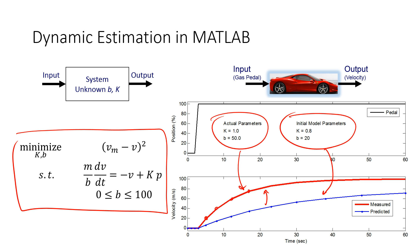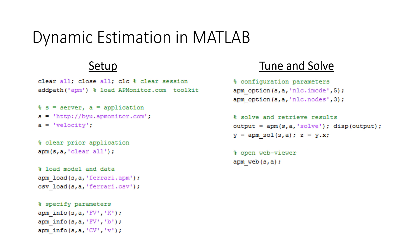In this case, it's going to be least squares, but I'm going to have to solve this and minimize this objective function. This is how we set it up in MATLAB. This is just to clear the session. I'm going to add the AP Monitor package, and that's available at apmonitor.com for download. Set up a server and application name. The first thing I'm going to do is go ahead and clear all of the prior application.